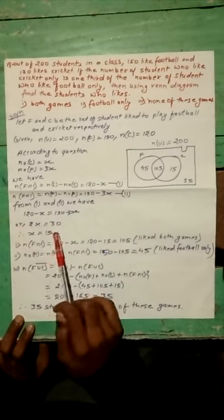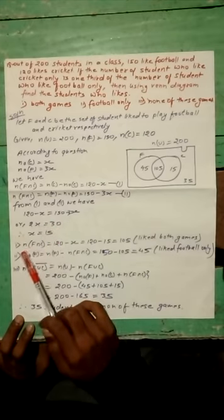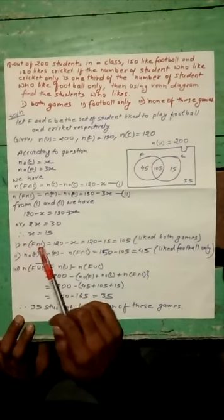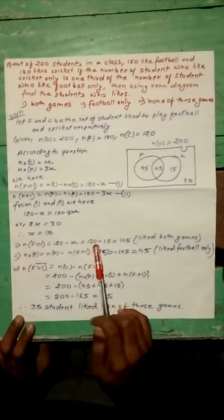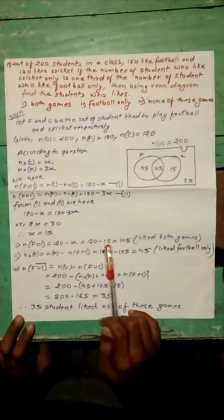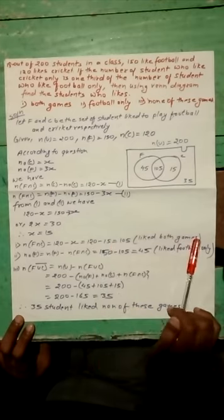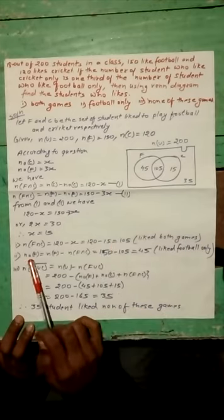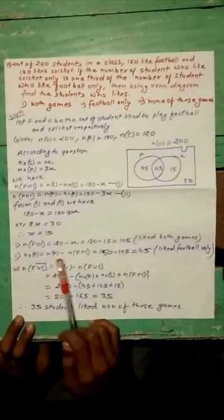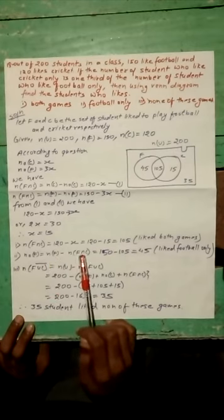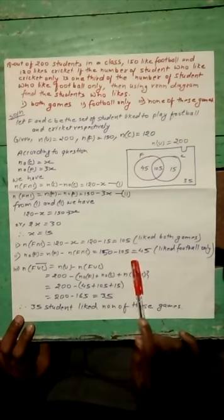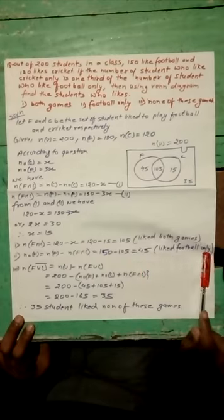Therefore X is equal to 15. Now we have n(F ∩ C) equals 120 minus X equals 120 minus 15 equals 105, which represents students who like both games. n(F ∩ C') equals n(F) minus n(F ∩ C) equals 150 minus 105 equals 45, like football only.